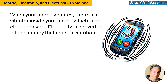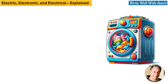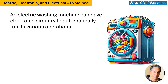When your phone vibrates, there is a vibrator inside your phone which is an electric device — electricity is converted into energy that causes vibration. An electric washing machine can have electronic circuitry to automatically run its various operations.